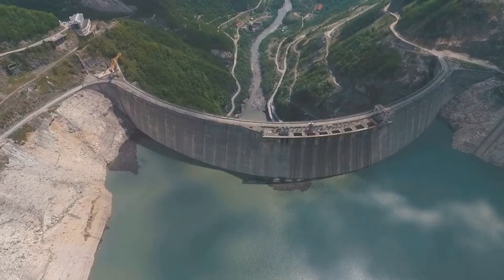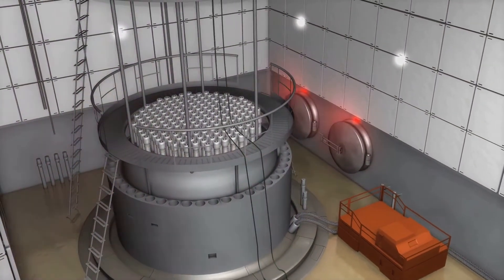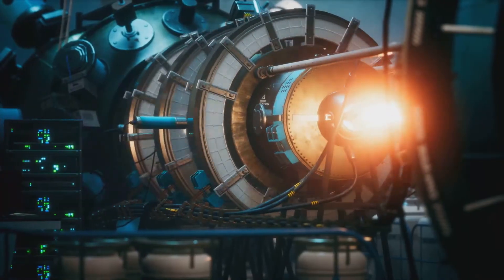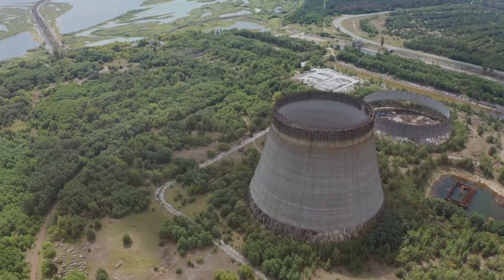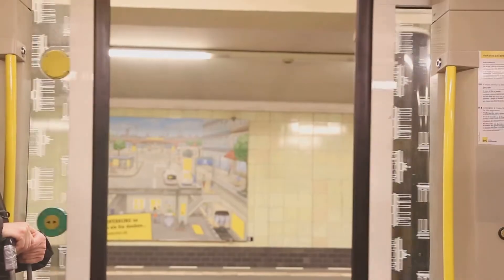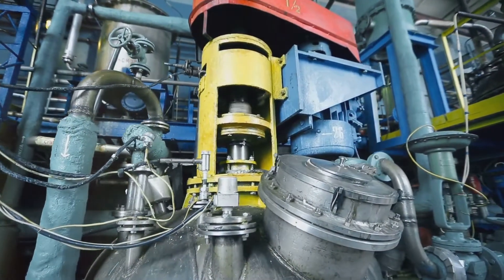Heavy water is primarily used in reactors with natural uranium fuel. It serves as both a neutron moderator and coolant. As a moderator, it slows neutrons, sustaining the chain reaction. As a coolant, it prevents reactor overheating. Heavy water reactors can use natural uranium, avoiding costly enrichment. They also operate at higher efficiencies, reducing waste.